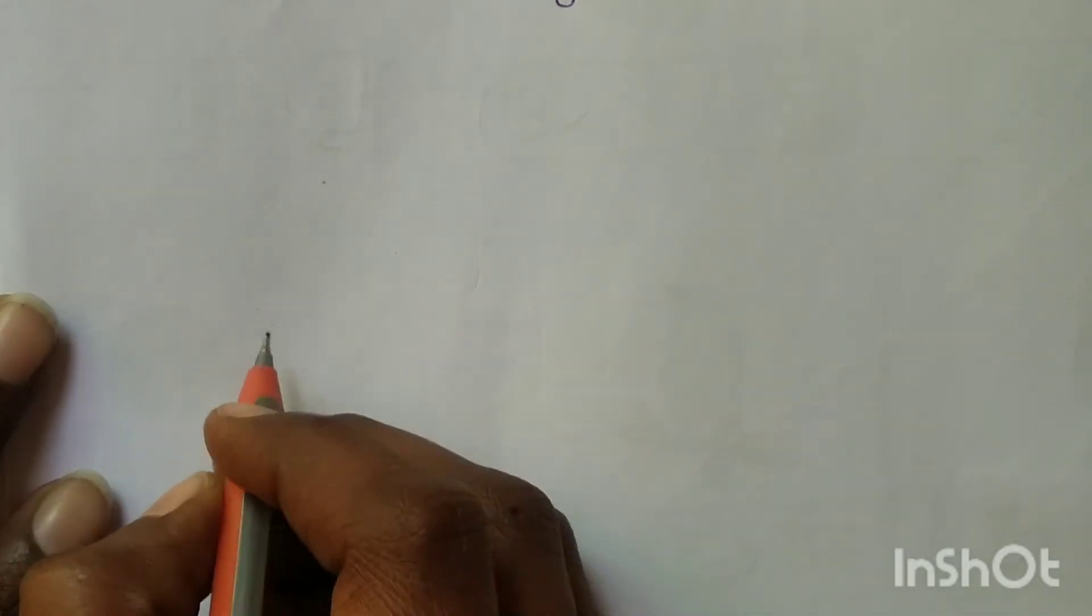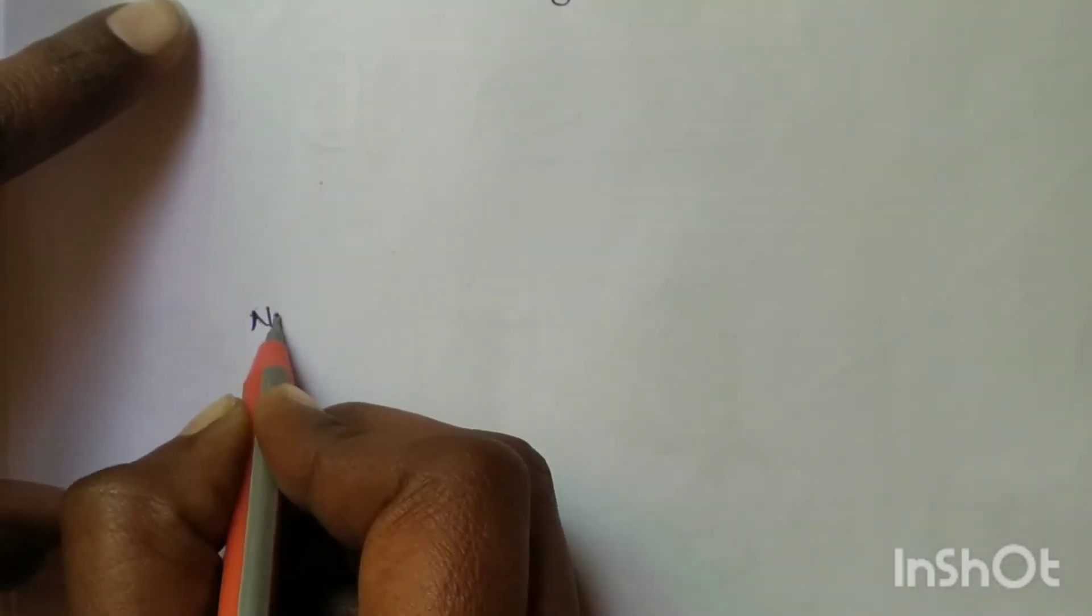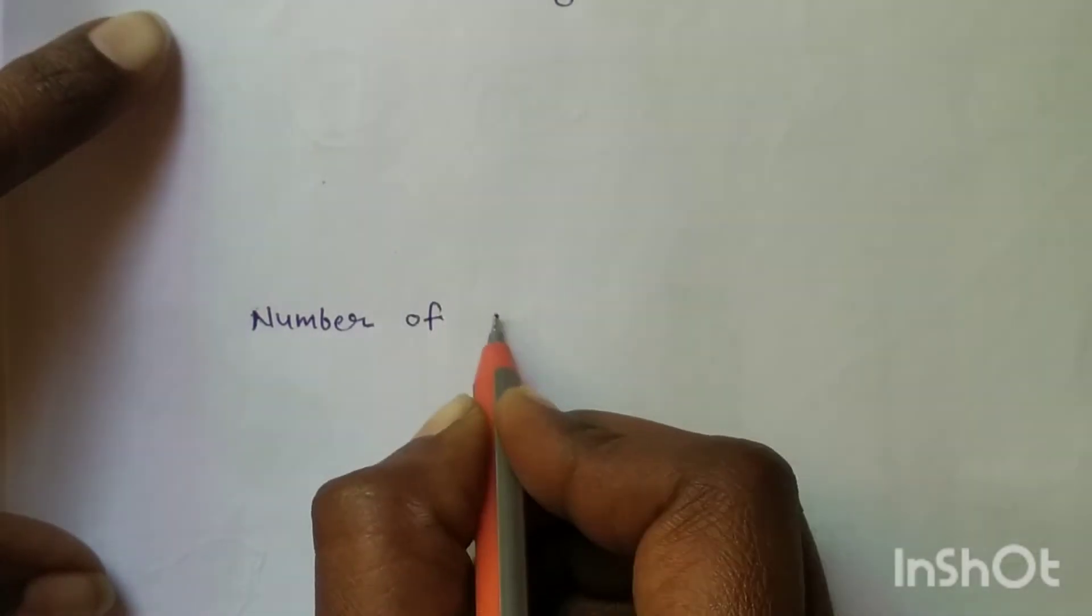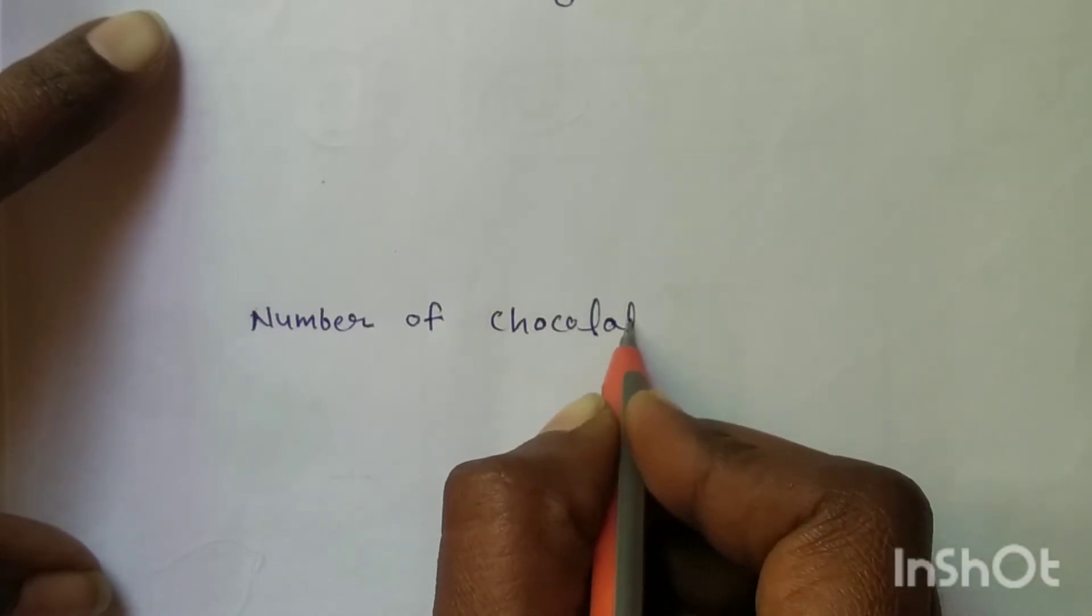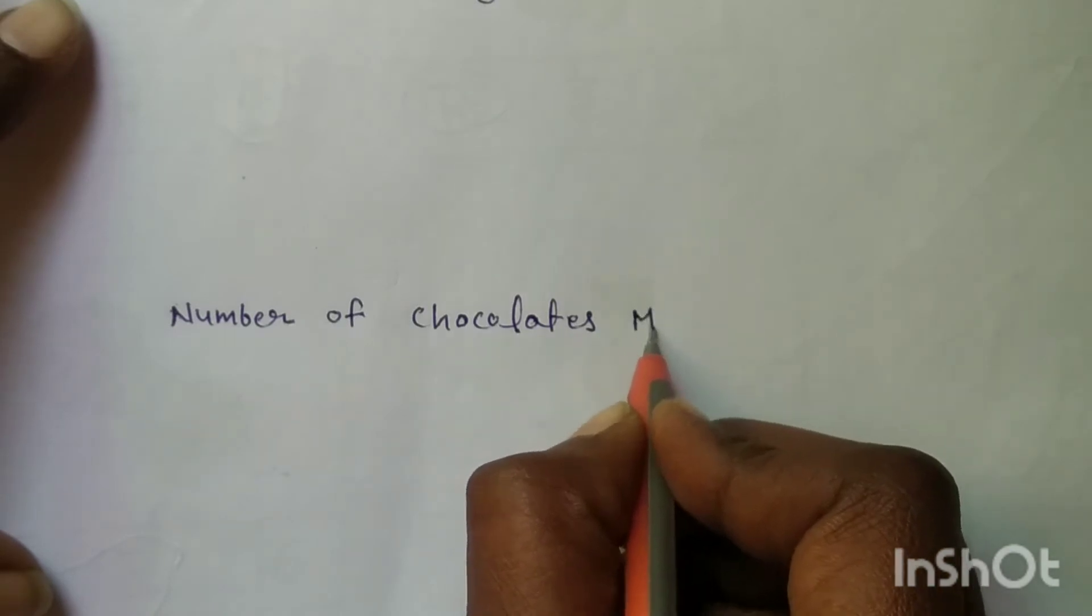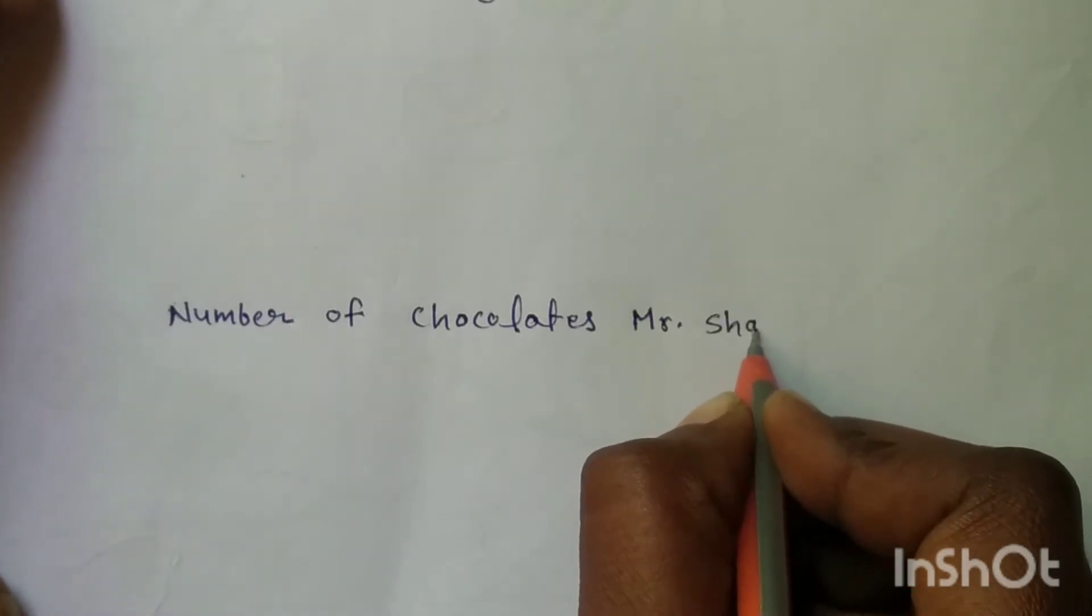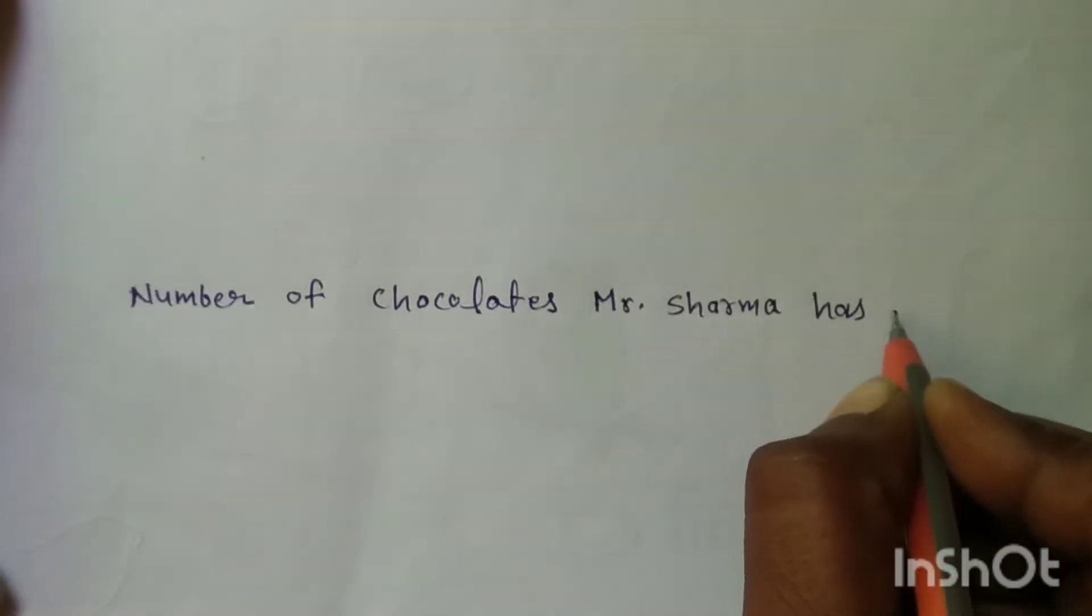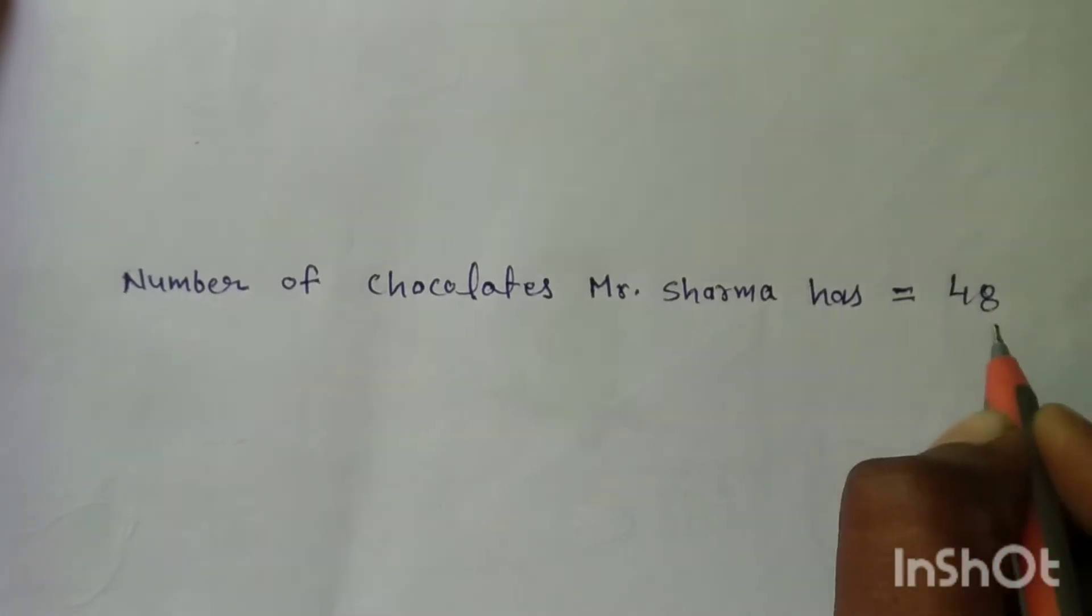Solve. Number of chocolates Mr. Sharma has is equal to 48.